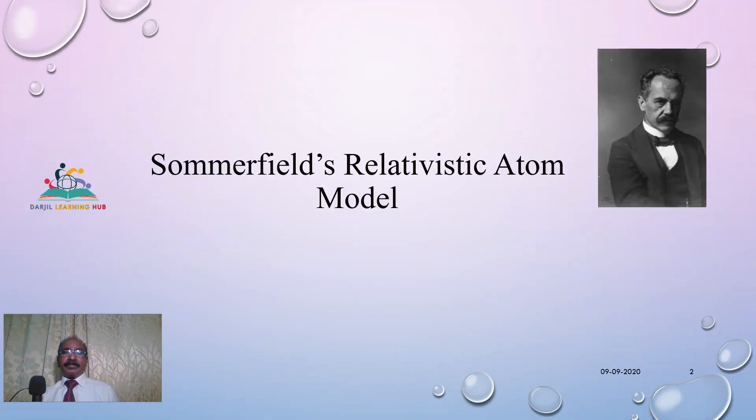In today's episode, we are going to study Sommerfield's relativistic atom model. In the earlier episode, we studied the Bohr atom model and there we met a small drawback - it couldn't explain the fine structure of the H-alpha line. To explain this, Sommerfield proposed this atom model. Let us see this in an elaborate manner.